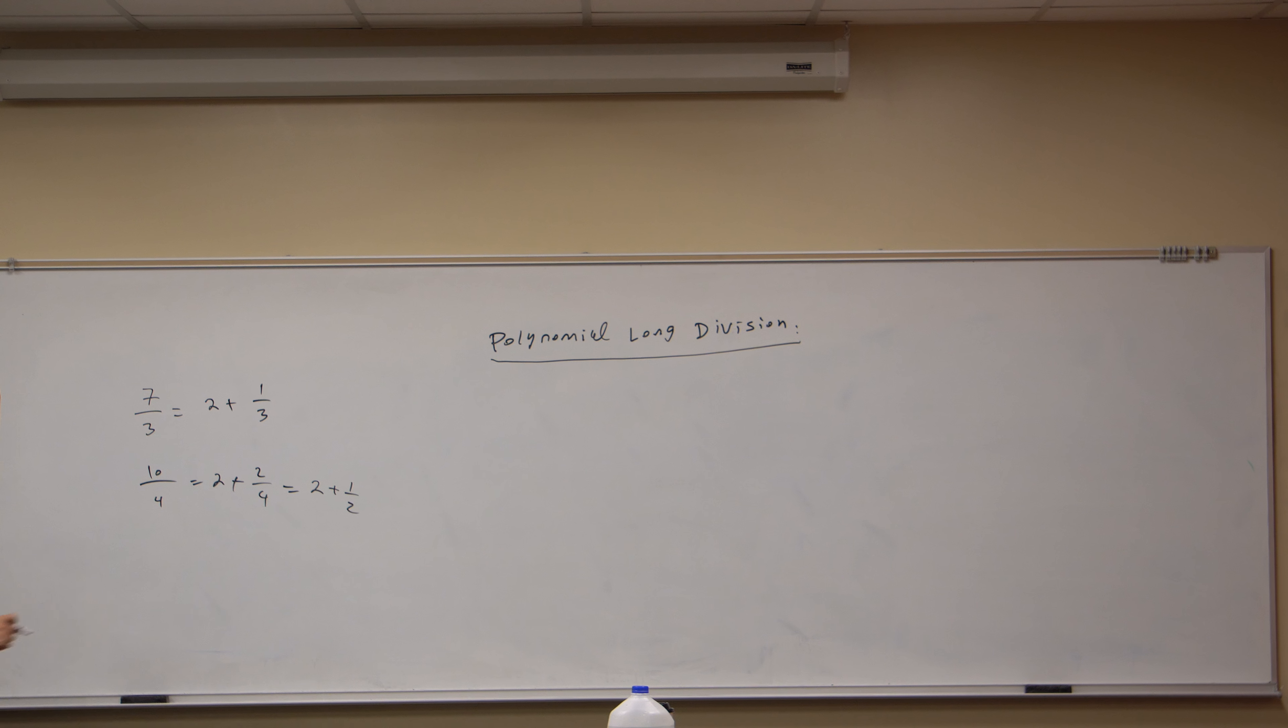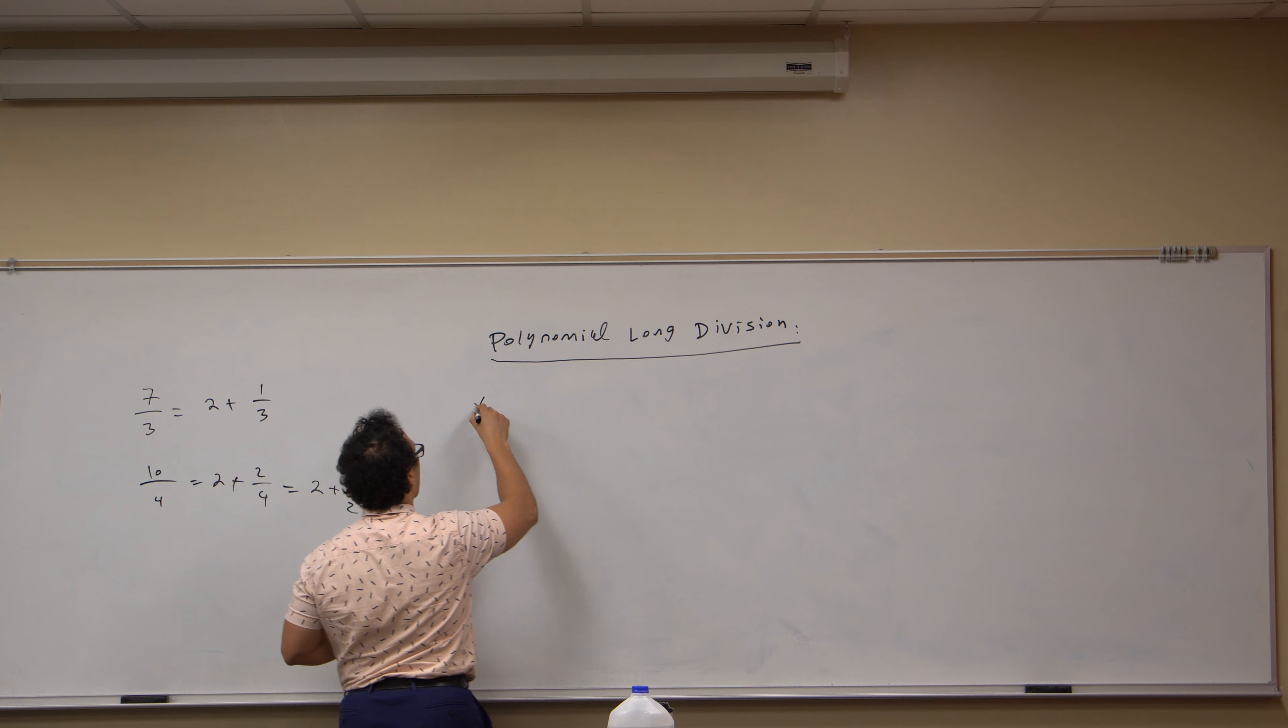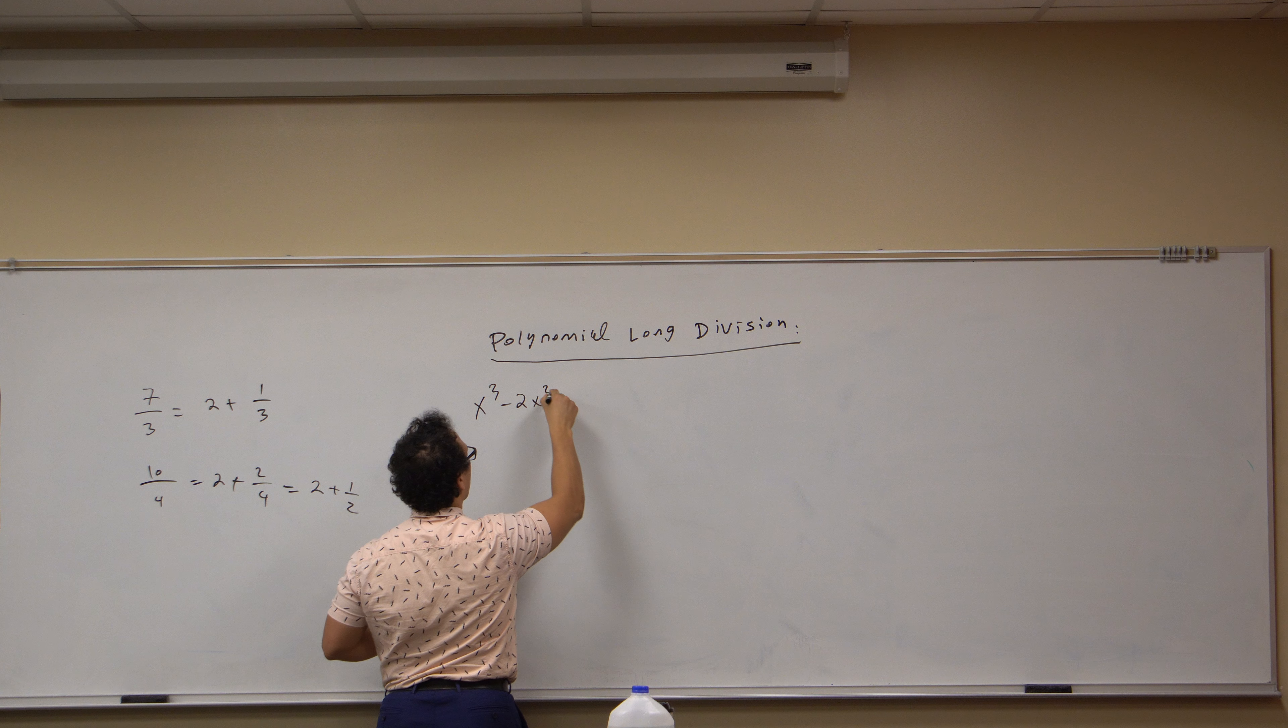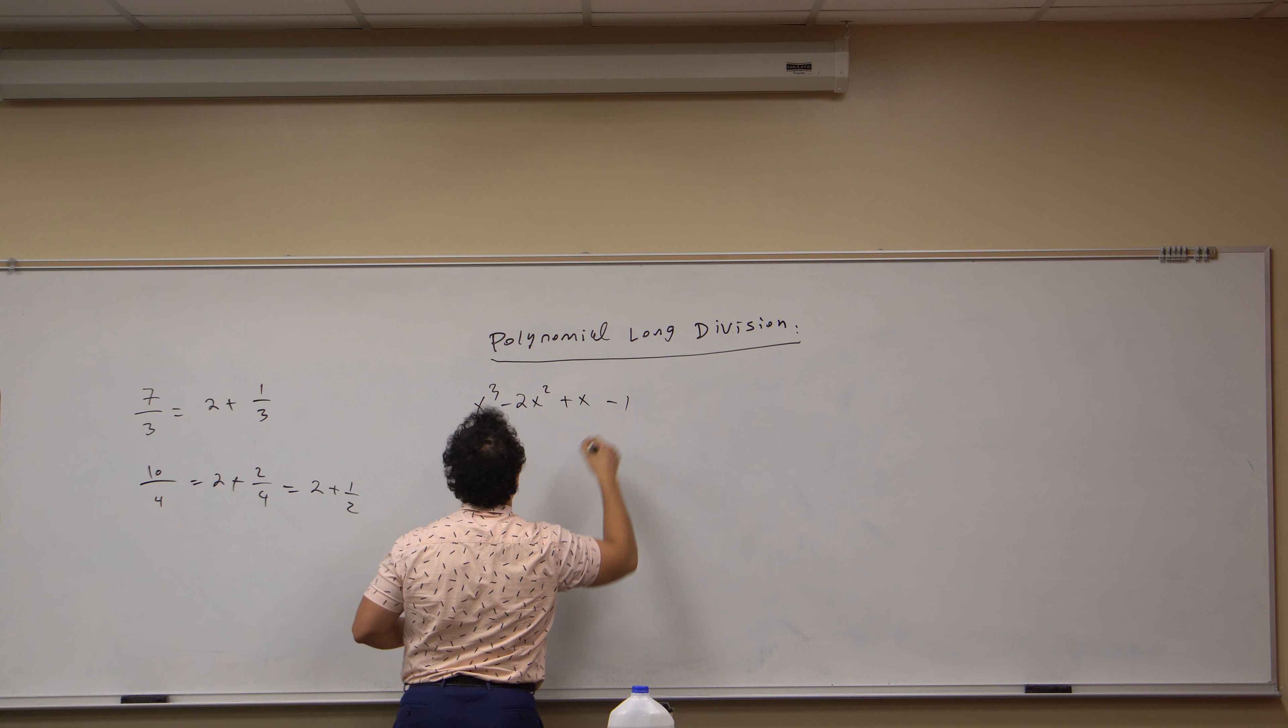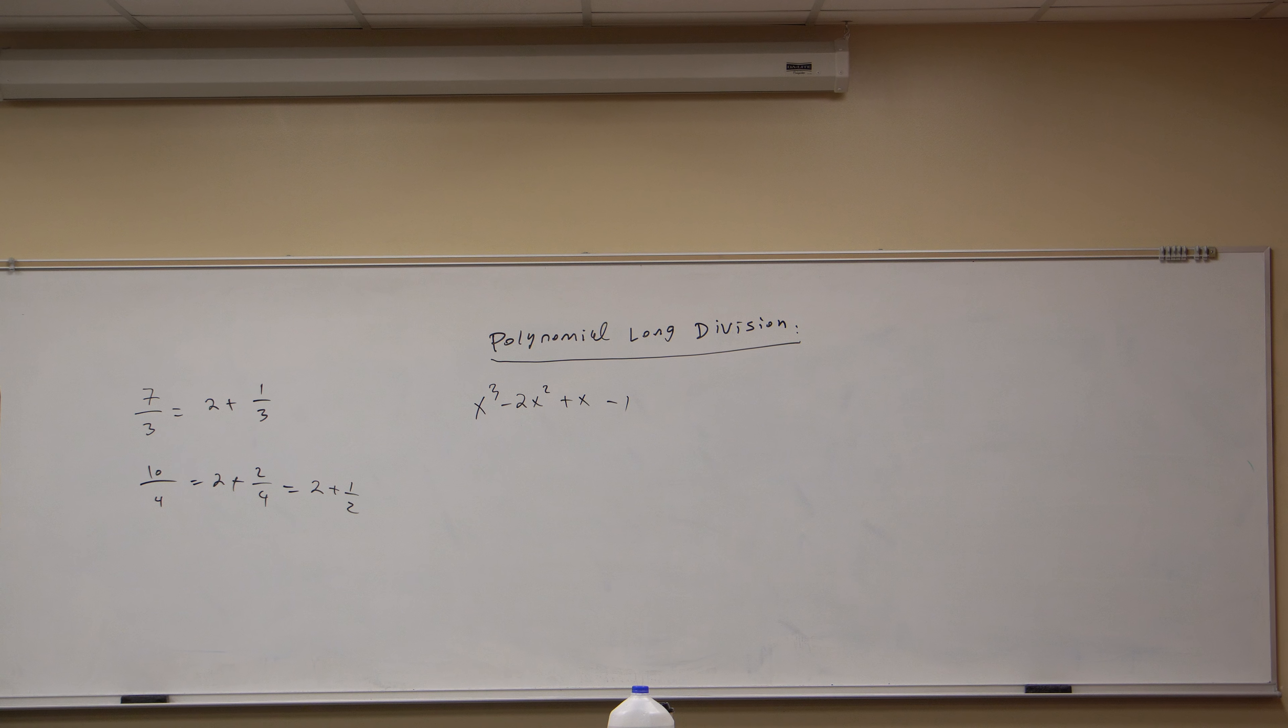Consider the polynomial x cubed minus two x squared plus x minus one, and let's divide that by x squared minus three.